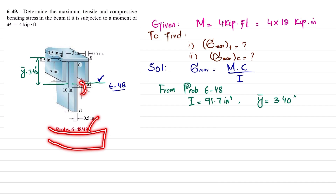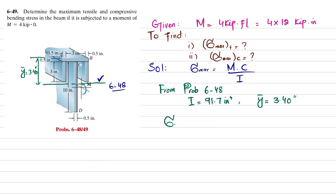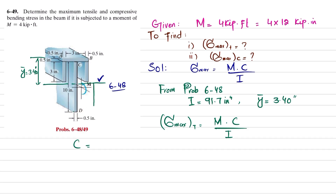Due to this moment, the beam will bend such that the top surface is under compression and the bottom surface is under tension. We will first find the maximum tensile stress. That is equal to maximum moment times c divided by I. For the lower surface in tension, c is the distance from the neutral axis to the bottom, which equals the total height of 10.5 inches minus y-bar of 3.40 inches.